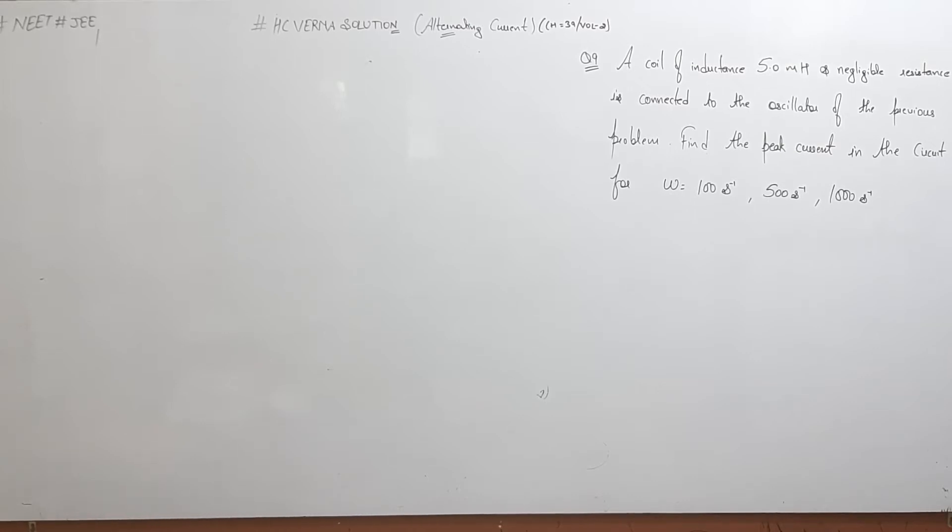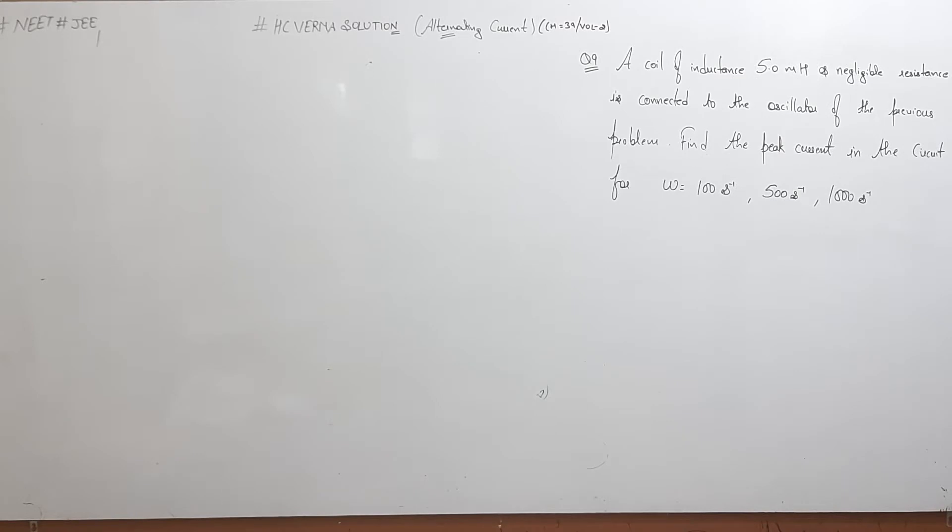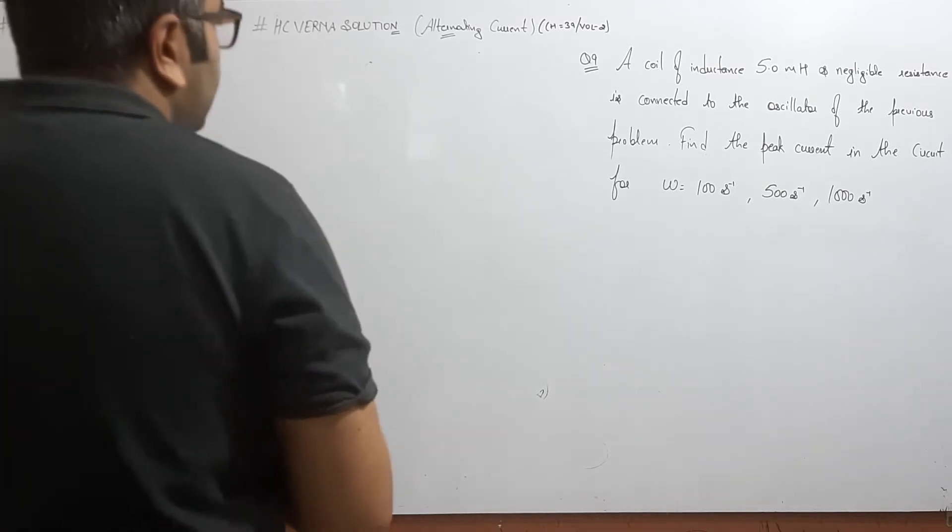We are doing question number ninth of chapter number 39 alternating current. A coil of inductance 5 millihenry and negligible resistance is connected to an oscillator of the previous problem. Find the peak current in the circuit for omega is equal to 100 per second, 500 per second, and 1000 per second.